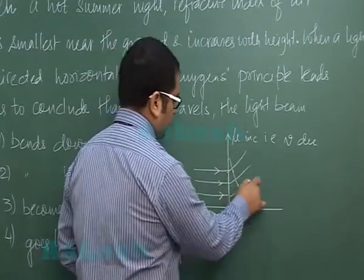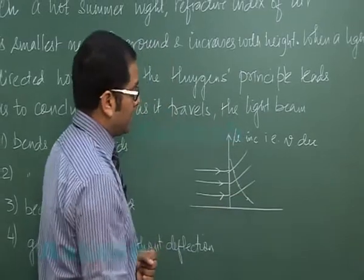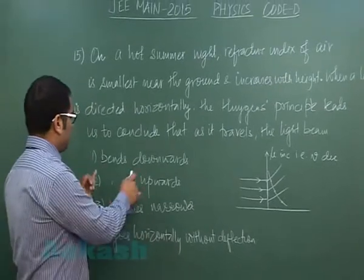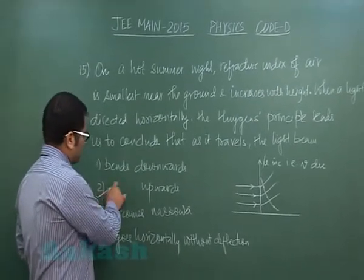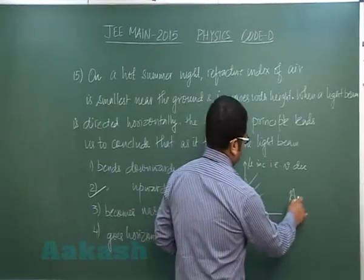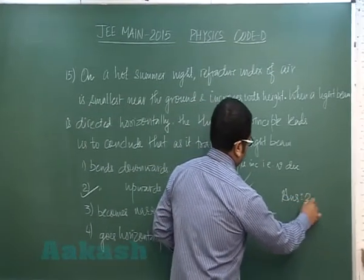So quite obviously this leads to bending of light in the upward direction. So we can certainly confirm about second option. It means it bends upward. So question number 15 has option 2. Level 15 has option 2.